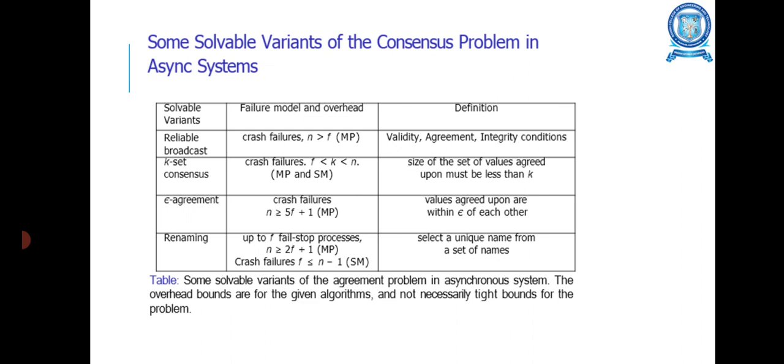The reliable broadcast model uses crash failures, mainly for validity, agreement, and integrity conditions. K-set consensus uses the crash failures failure model, where the size of the set of values agreed upon must be less than K. Epsilon agreement also uses crash failures where the values agreed upon are within epsilon of each other. Renaming is up to F fail-stop processes, using crash failures to select a unique name from a set of names.